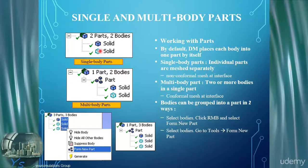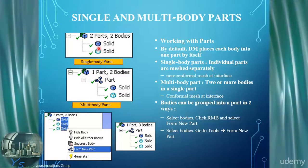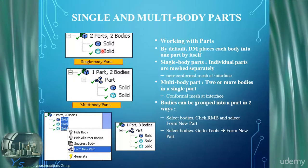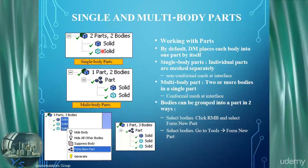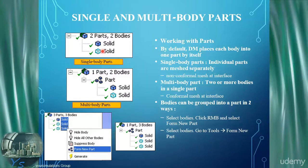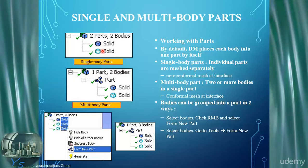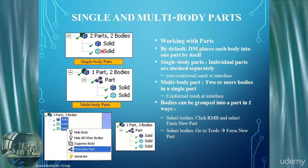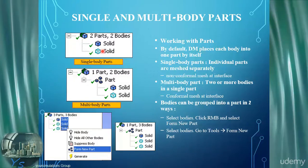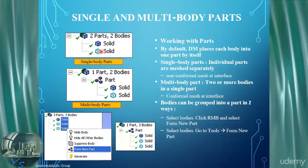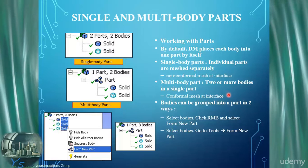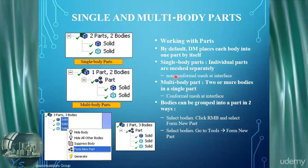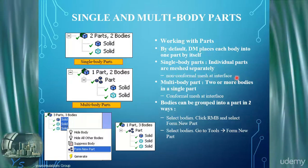If we place each of these bodies into a single part, they would then be able to see each other. This means we can perform a Boolean imprinting or shared topology so they can share lower topology with each other, effectively forming a conformal interface. Without sharing of topology and in separate parts, we would automatically create a non-conformal mesh at the interface.